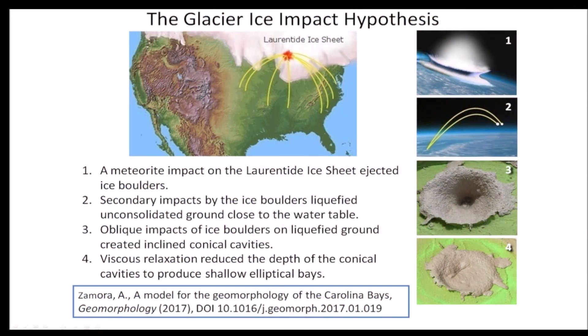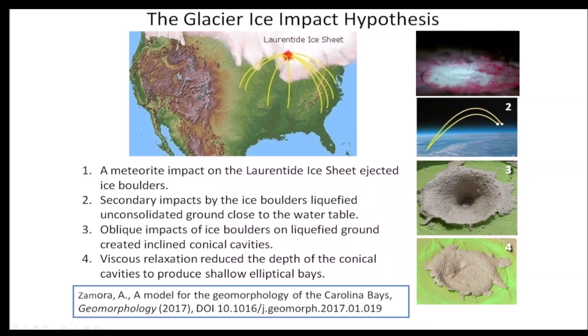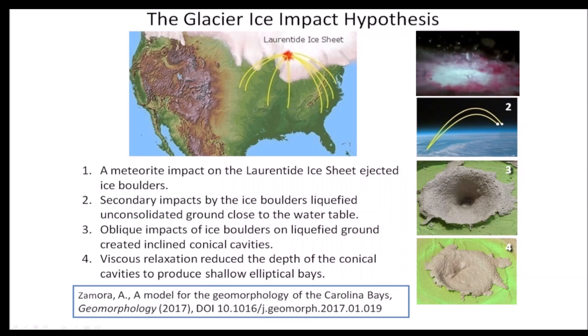The Glacier Ice Impact Hypothesis, published in 2017, proposes a sequence of four mechanisms responsible for the origin of the Carolina Bays and the Nebraska Rainwater Basins. First, an extraterrestrial impact on the Laurentide Ice Sheet ejected ice boulders in ballistic trajectories.